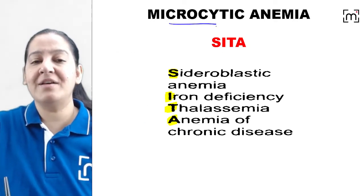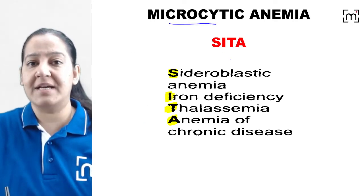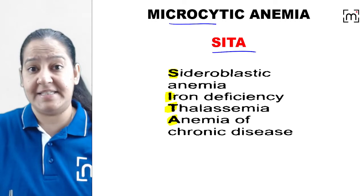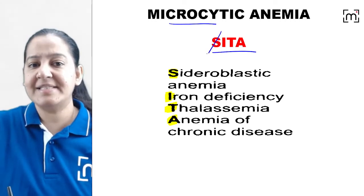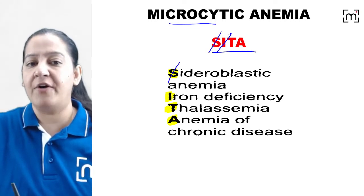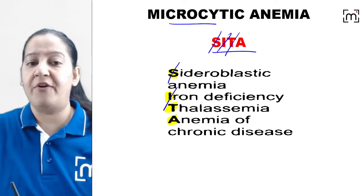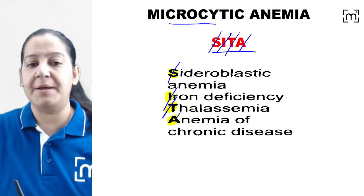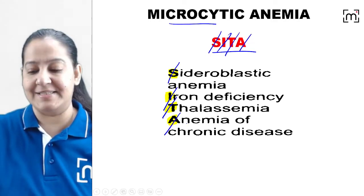So for microcytic anemia, there are 4 types. The mnemonic is SITA — S-I-T-A. S stands for sideroblastic anemia, I for iron deficiency anemia, T for thalassemia, and A for anemia of chronic disease.